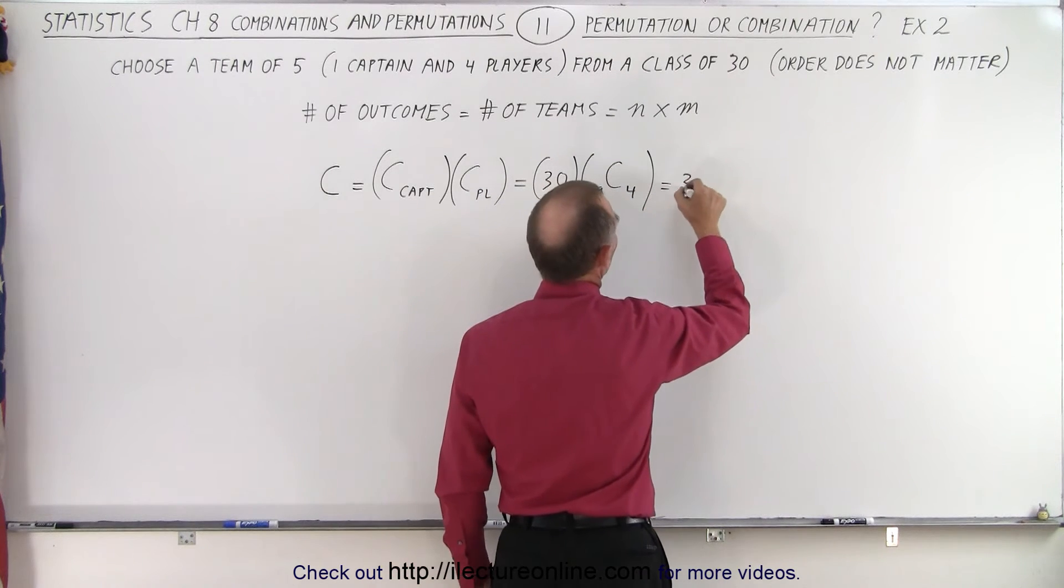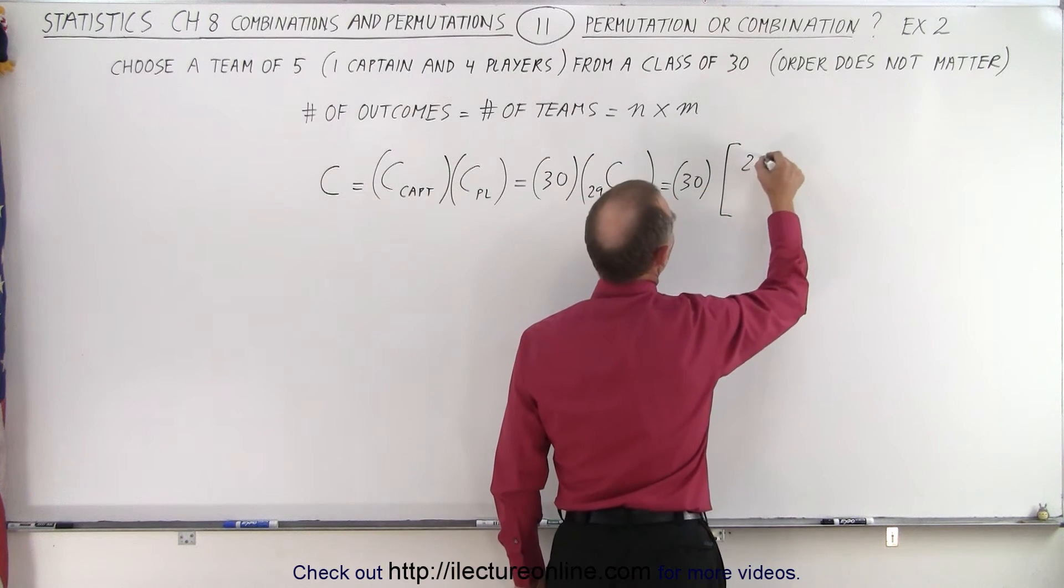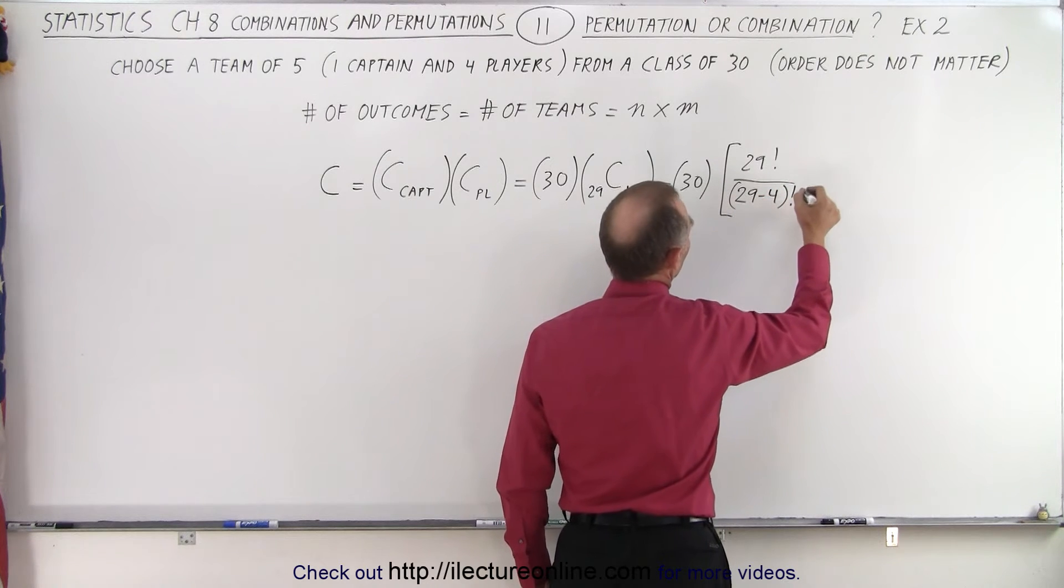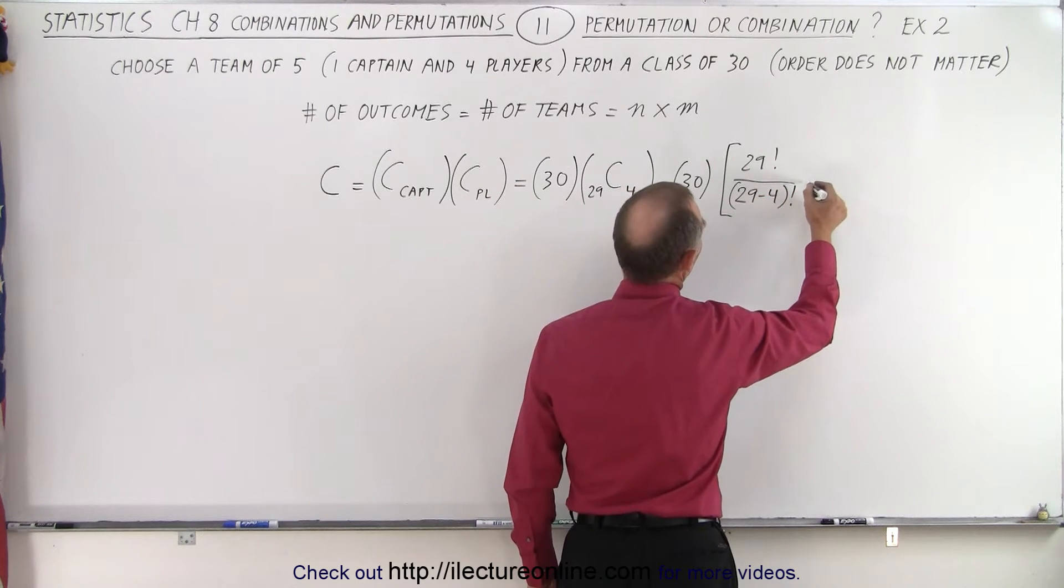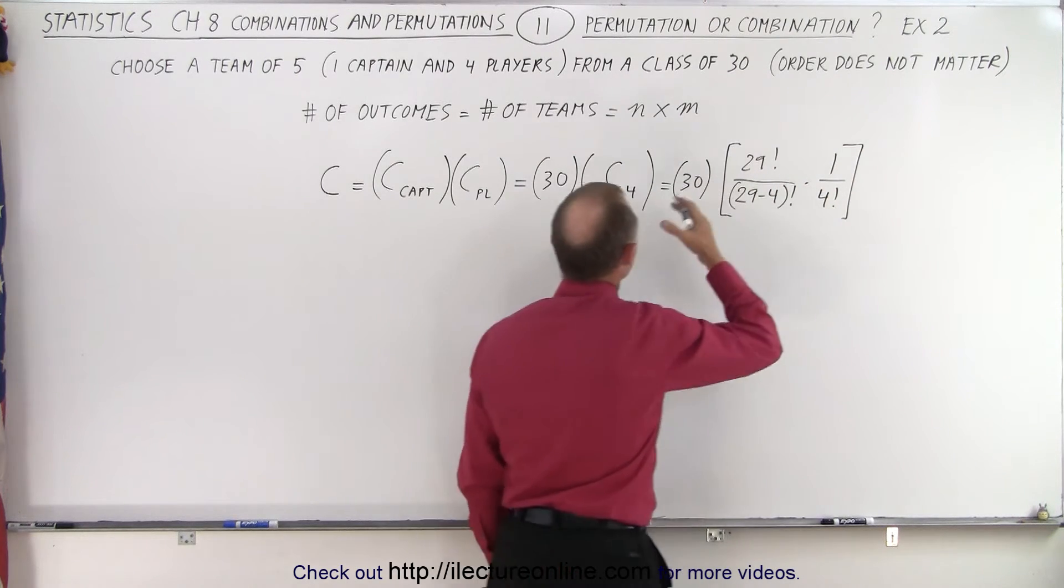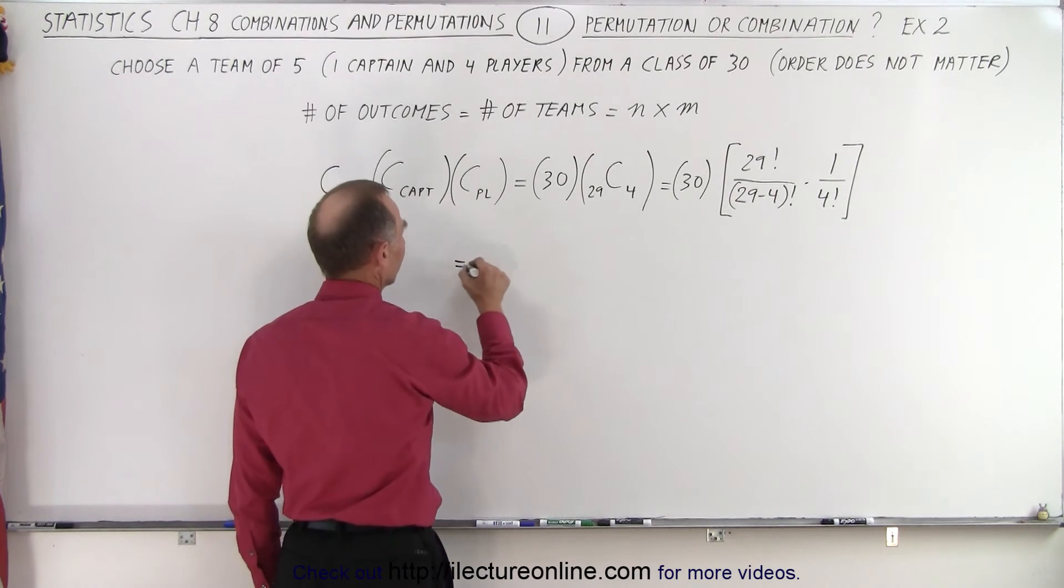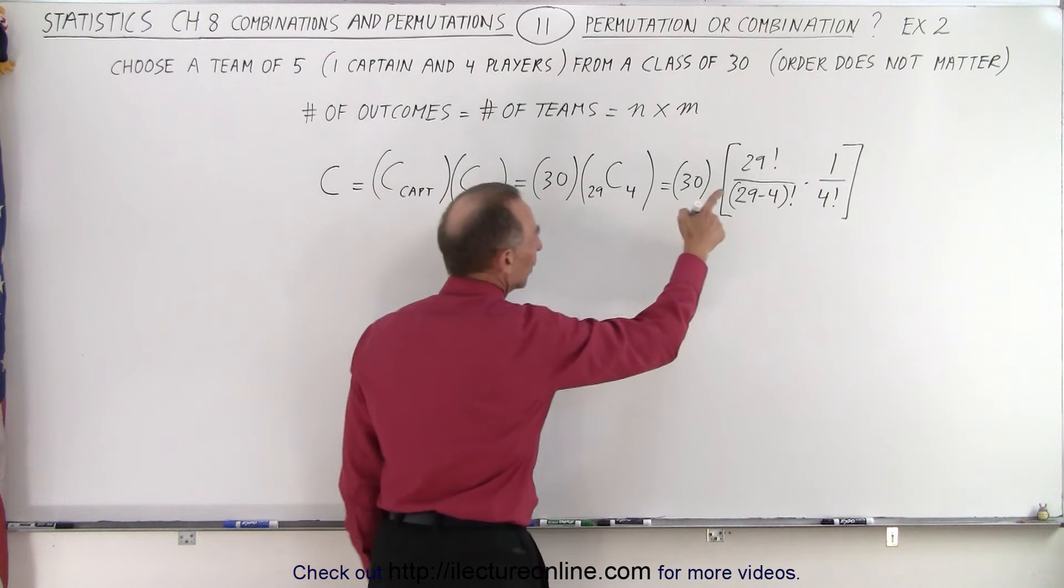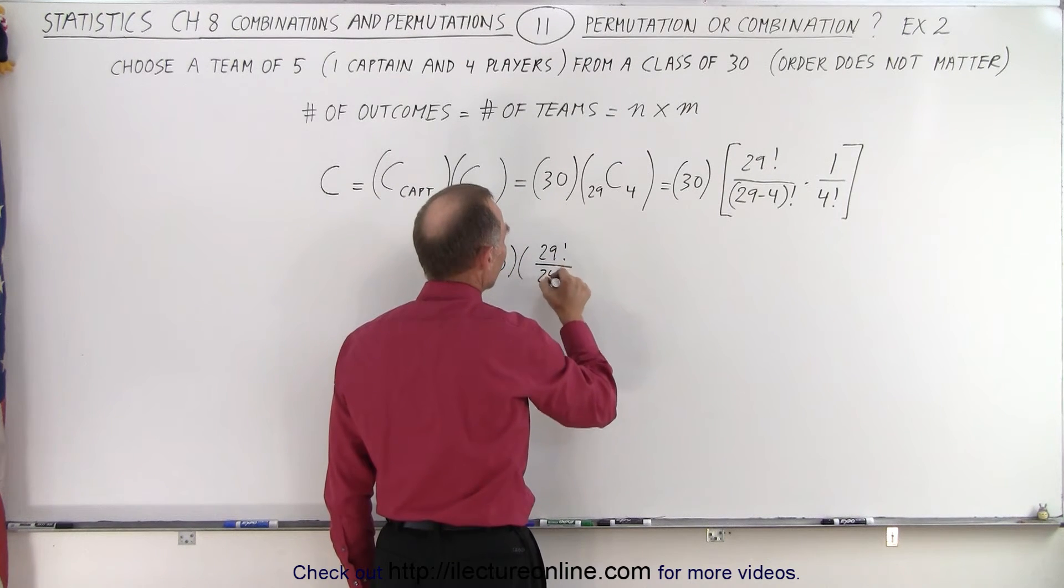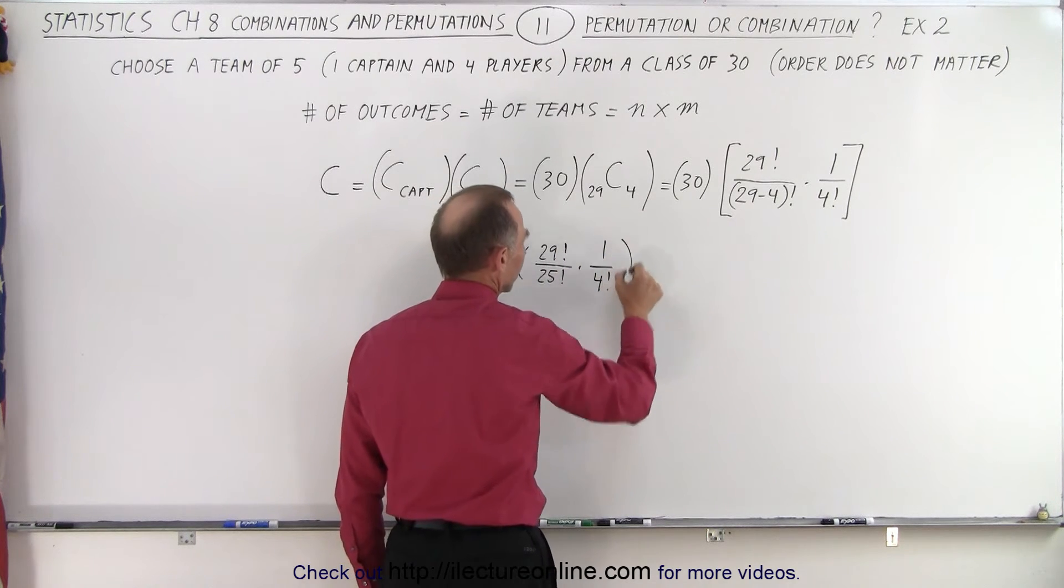So in this case, that's going to be equal to 30 multiplied times 29 factorial divided by 29 minus 4 factorial, and then multiply that times 1 over 4 factorial. So this is equal to 30 multiplied by 29 factorial divided by 25 factorial, and multiply times 1 over 4 factorial like this.